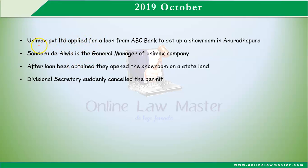The scenario is based on state land. Unimax Private Limited applied for a loan from ABC Bank to set up a showroom in Anuradhapura. Sandarudu Anluis is the General Manager of the Unimax company, and after the loan was obtained, they opened the showroom on state land. The Divisional Secretary had earlier given permission to do the construction and necessary improvements to that state land, but later he suddenly cancelled the permit.